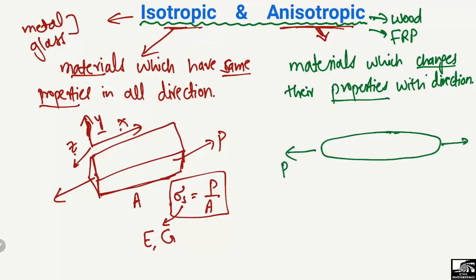In the x-direction they will have some different values, in the y-direction they will have different properties, and in the z-direction they may have different or possibly similar properties to the x-direction. Materials which show different properties in each direction are known as anisotropic materials.